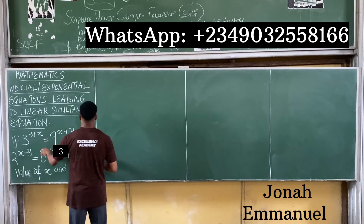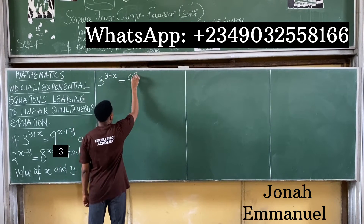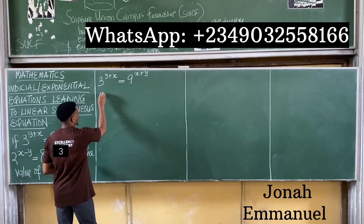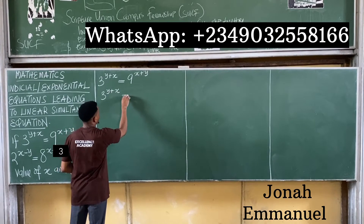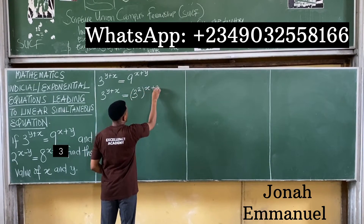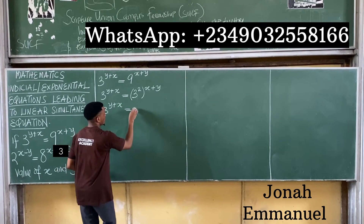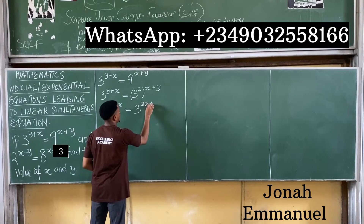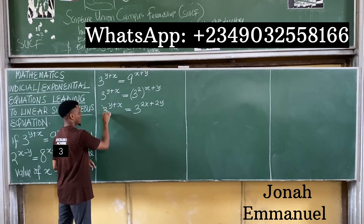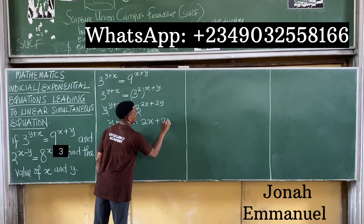Pick up the first equation: 3 to the power y plus x is equal to 9 to the power x plus y. My first task would be to express both sides in the same base. This becomes 3 to the power y plus x is equal to 9, which is 3 to the power 2, all to the power x plus y. So I have 3 to the power y plus x is equal to 3 to the power 2x plus 2y.